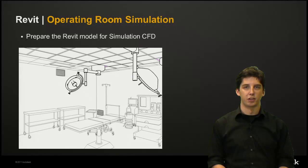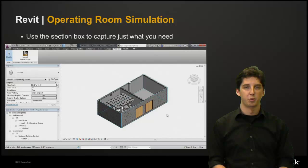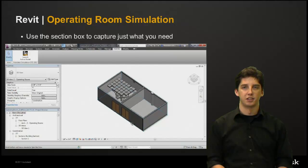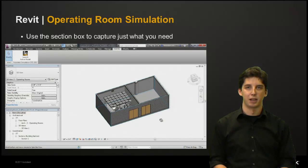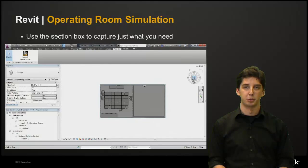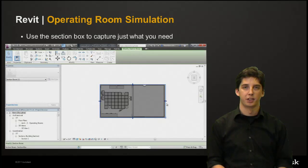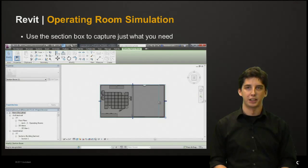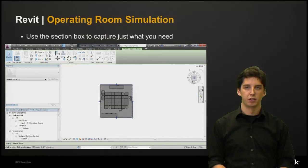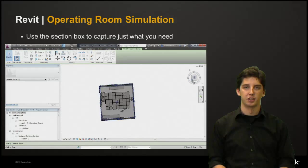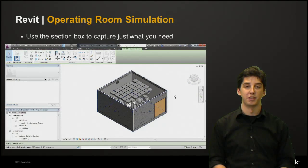In the first part of our video we will focus on how to prepare the Revit model for Simulation CFD. One of the first things you want to do is use a section box to grab just the model part that you need. In this example you can see we have another room next to our operating room which we don't want in our simulation model, so we'll grab the edge of our section box and crop out the part we don't want. A general rule of thumb is if you can see it in your view, it will import into Sim CFD.